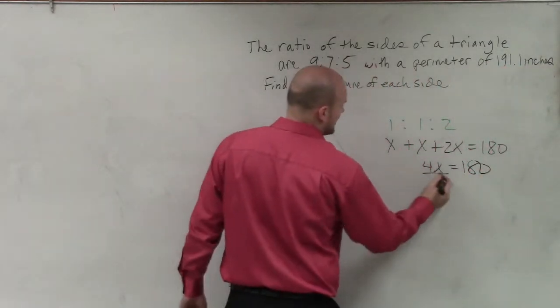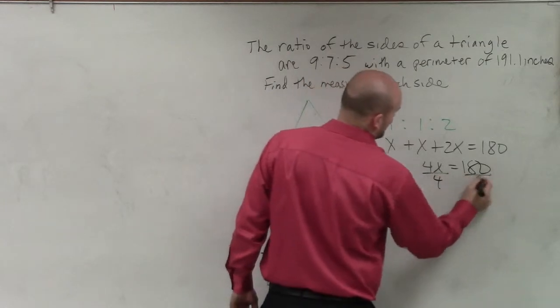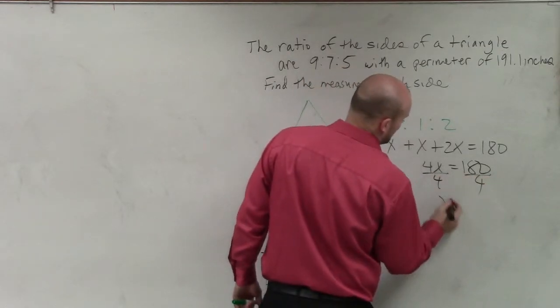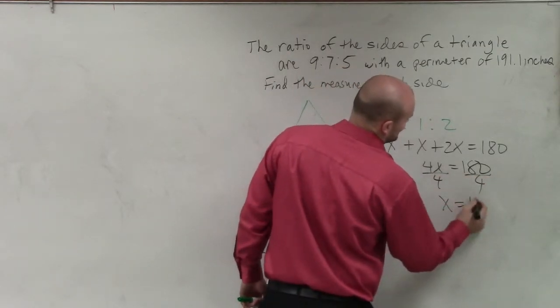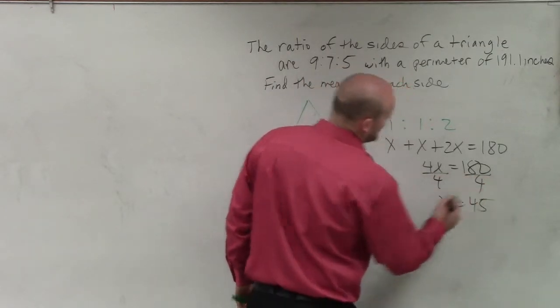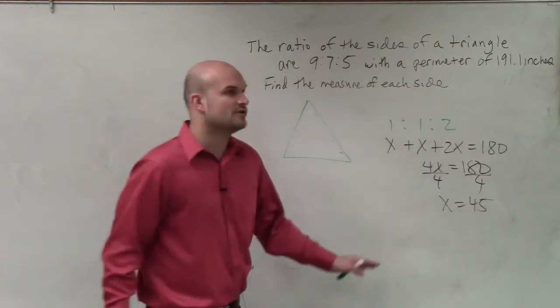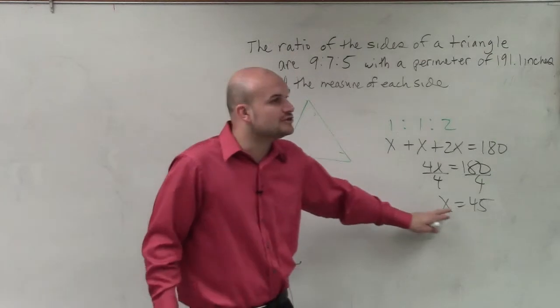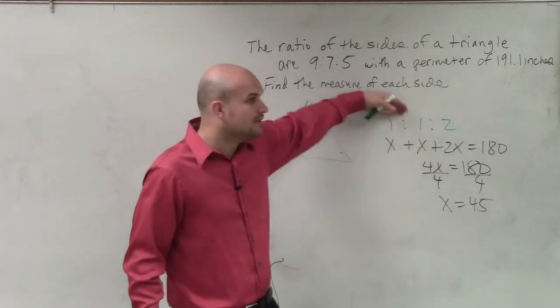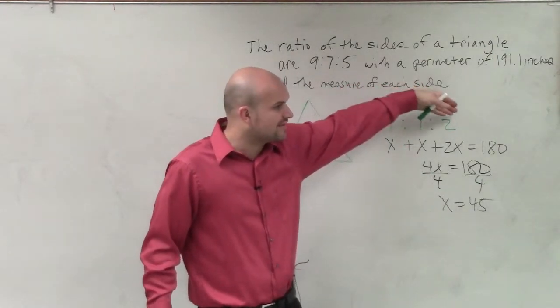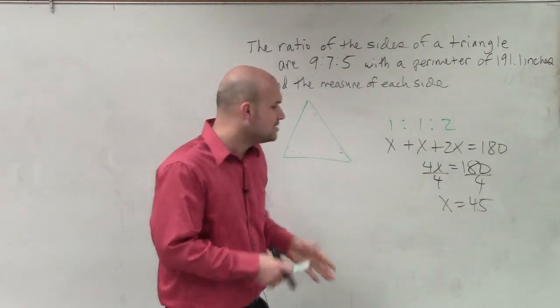So 4x equals 180, divided by 4 on both sides, x equals 45. Therefore, you can now see that the actual angles are 45, 45, and 90.